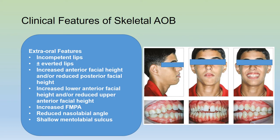The extraoral features include incompetent lips, there may be everted lips, increased anterior facial height and/or reduced posterior facial height, increased lower anterior facial height and/or reduced upper anterior facial height, an increased Frankfurt-mandibular plane angle, reduced nasolabial angle, and a shallow mentolabial sulcus.